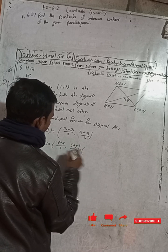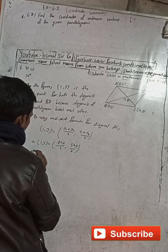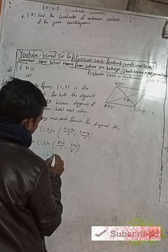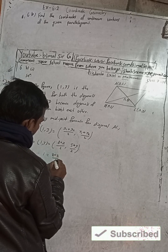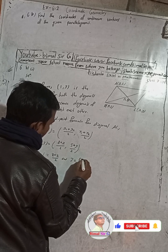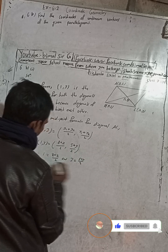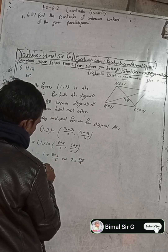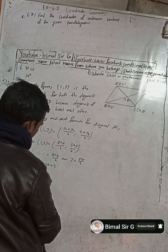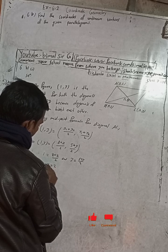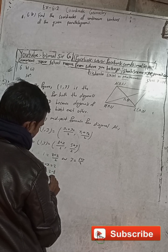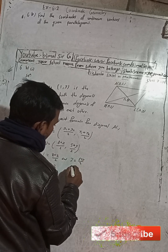Let's solve this. Therefore, 1 is equal to 8 plus x by 2, and 3 is equal to 5 plus y by 2. This implies 8 plus x is equal to 2, therefore x is equal to 2 minus 8, therefore x equals minus 6.